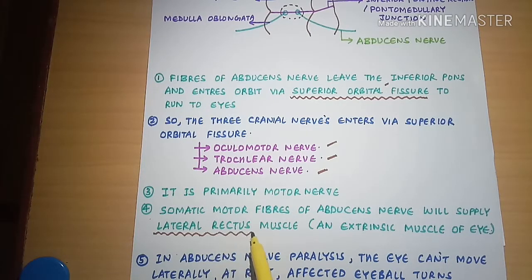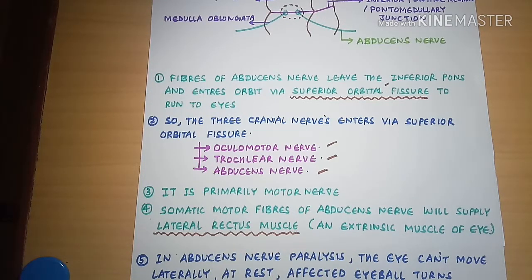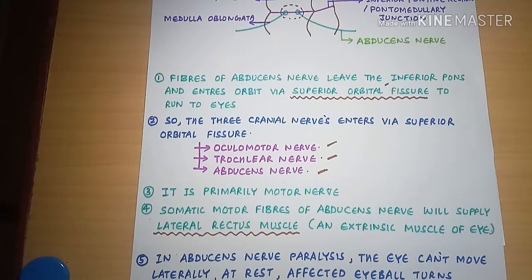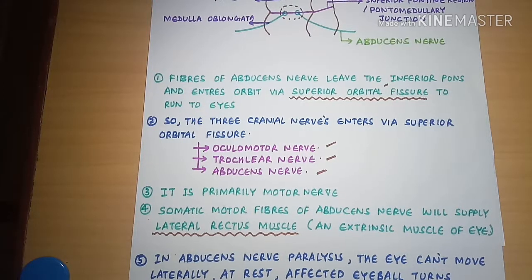The oculomotor nerve supplies the inferior rectus, superior rectus, medial rectus, inferior oblique, and levator palpebrae superioris muscles. The trochlear nerve supplies the superior oblique muscle. But the abducens nerve supplies the lateral rectus muscle.